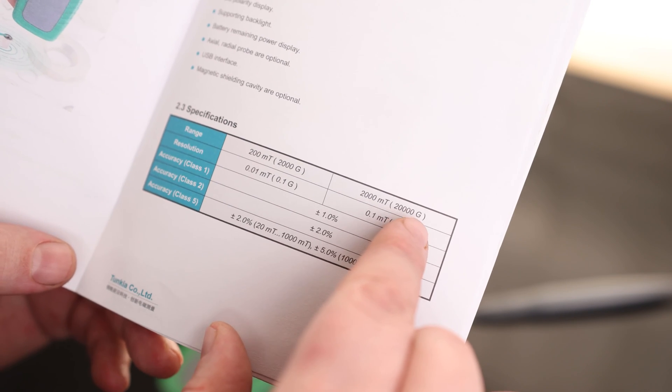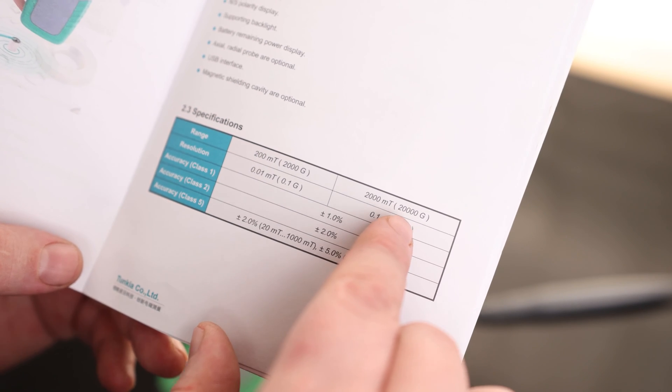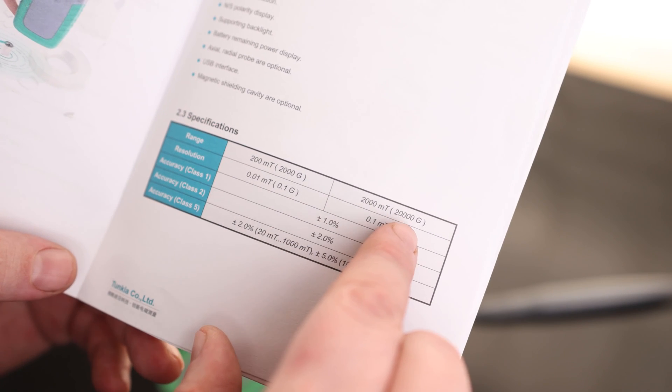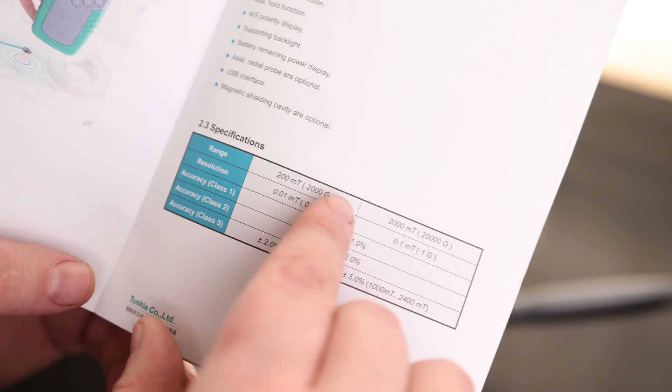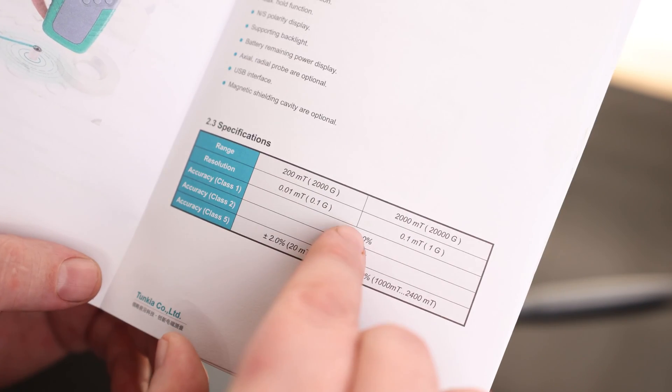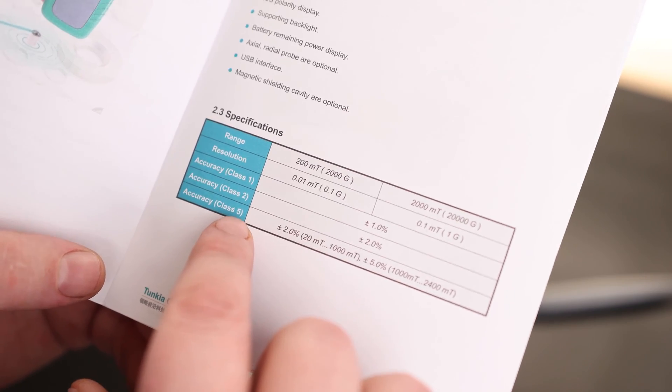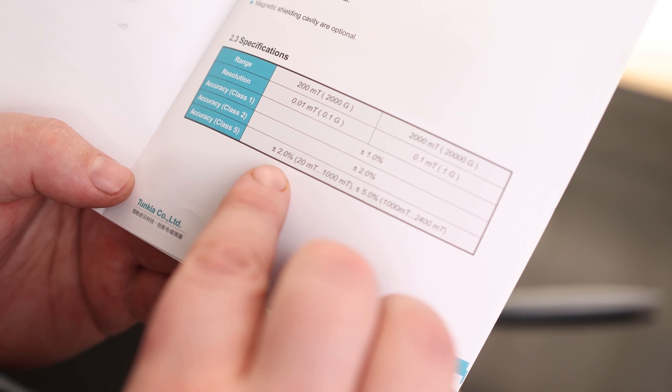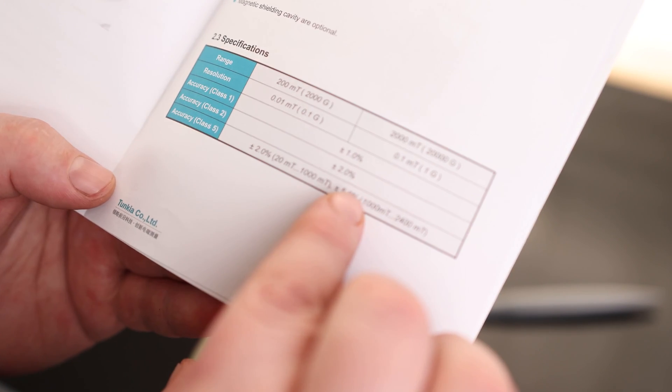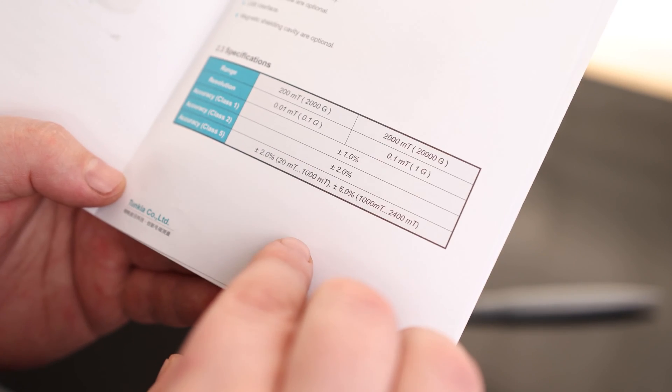And of course, one Gauss is one ten thousandth of a Tesla. So that means that 20,000 Gauss is 2,000 milliteslas. So just add a zero if you want to convert that to Gauss. So 200 to 2,000 milliteslas. And there's also three different classes. See on here, this is a class five. So that's going to be accurate up to 2% at 20 milliteslas or 5% at 1,000 milliteslas.